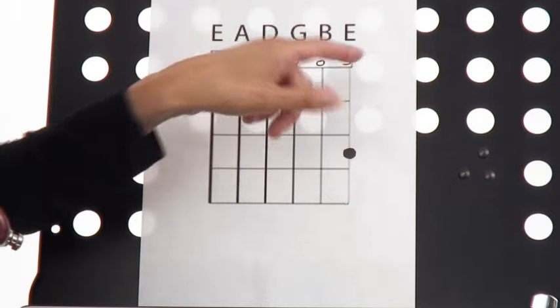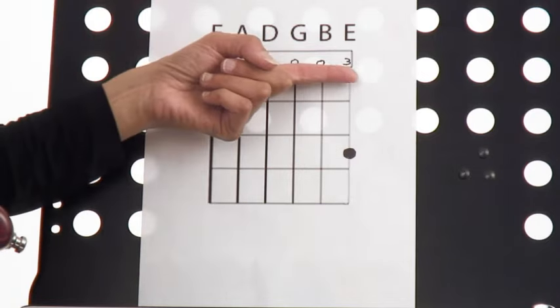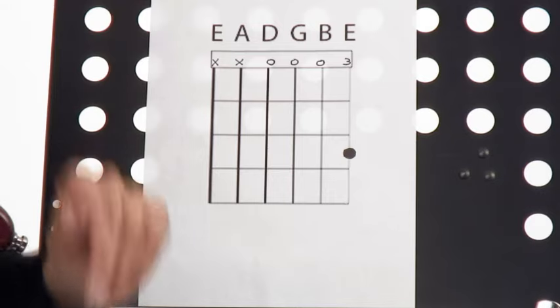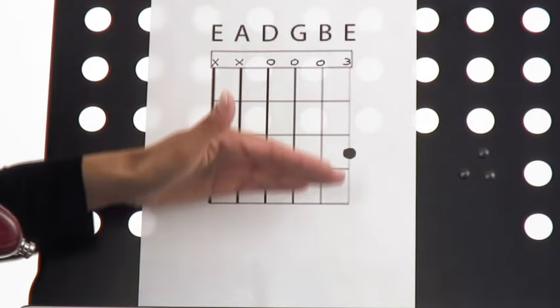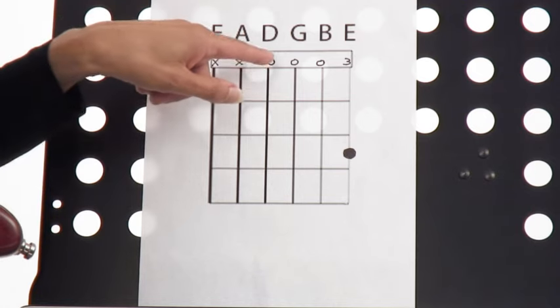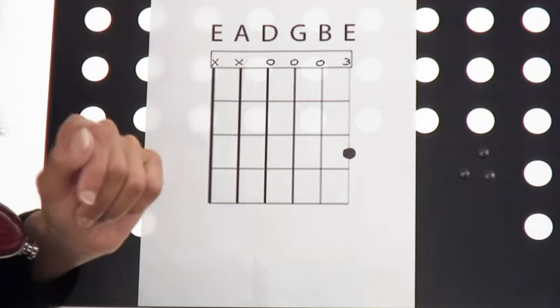So the third finger, the ring finger, goes on the first string, first, second, third fret. So let me just go over that with you one more time. The lines going down are the strings. Don't play the sixth or the fifth. The zeros mean you're going to strum it but you're not going to put a finger down.